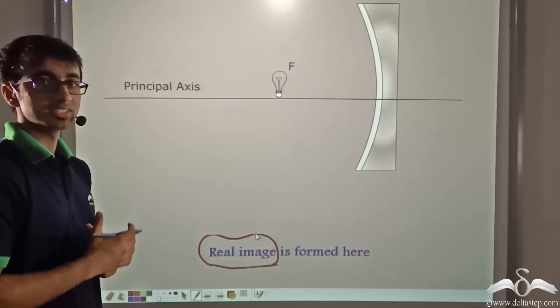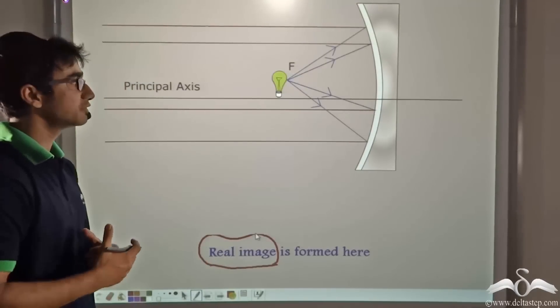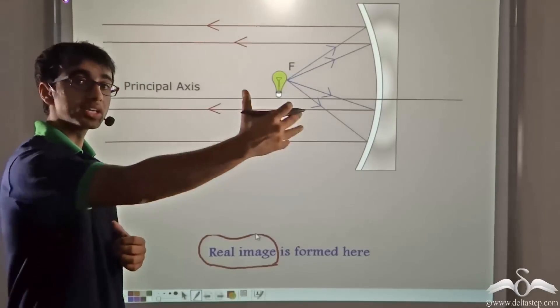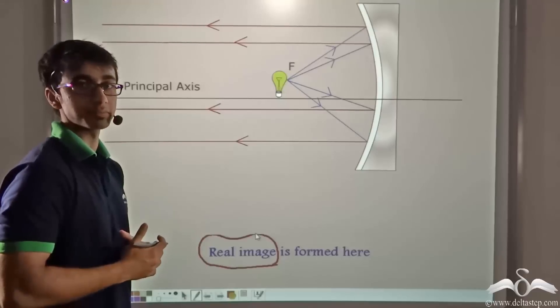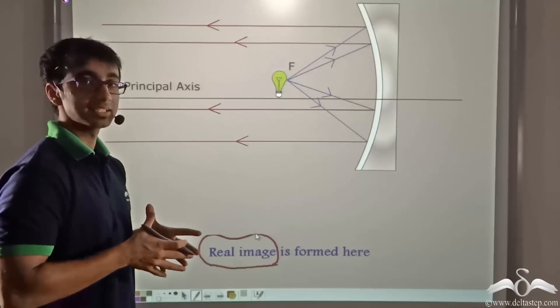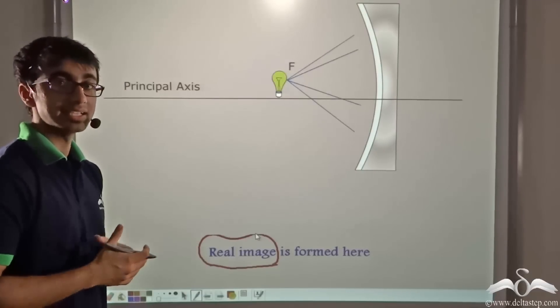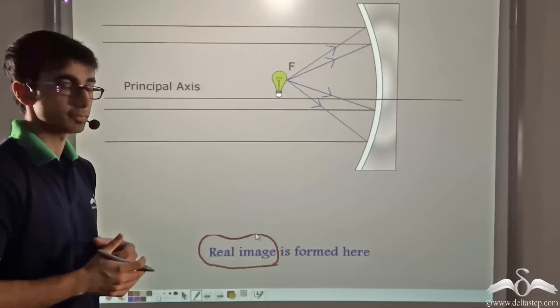This is how the driver of the car can see for a long distance ahead, because the rays of light coming out from the headlight are parallel.